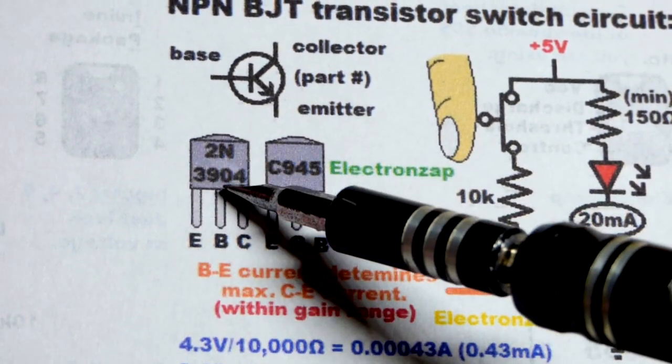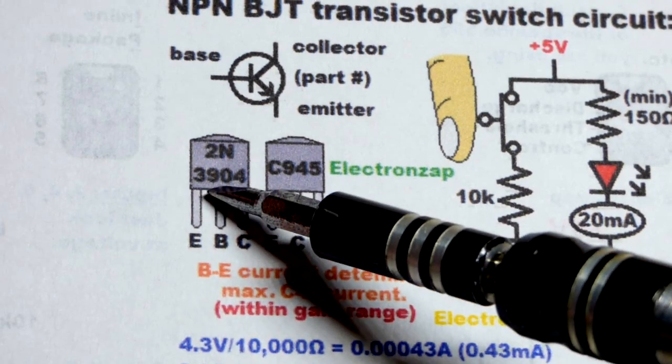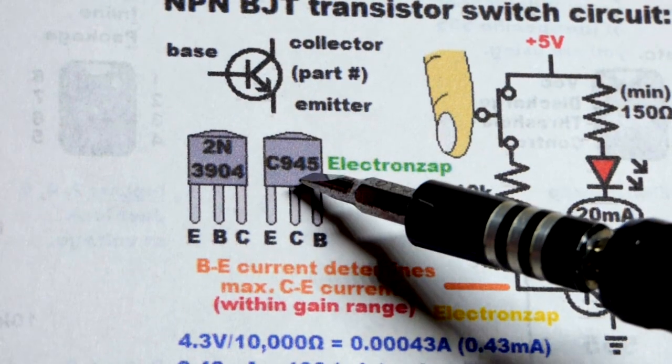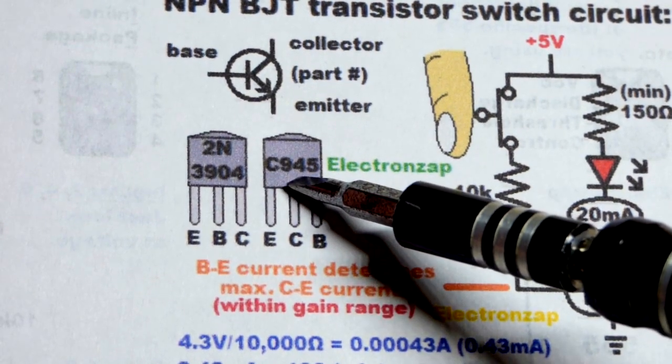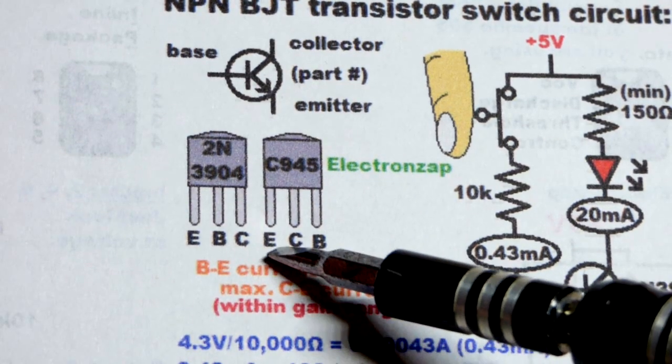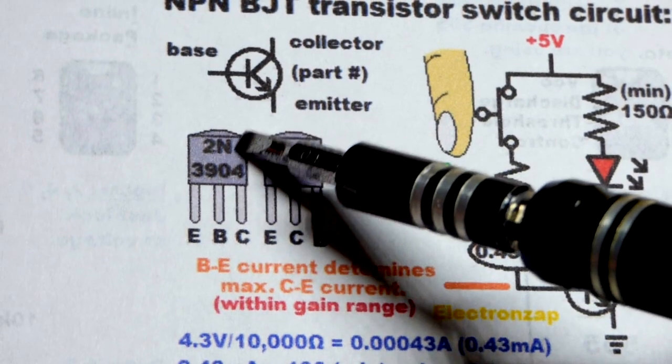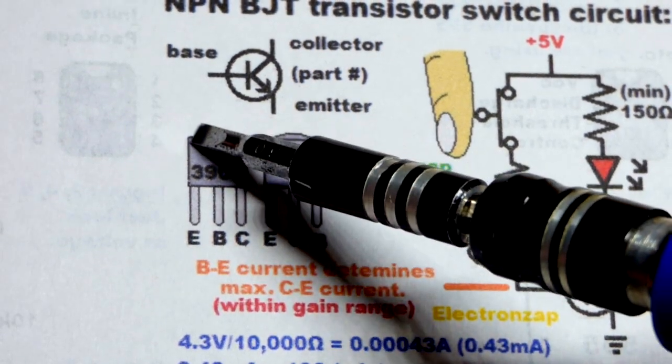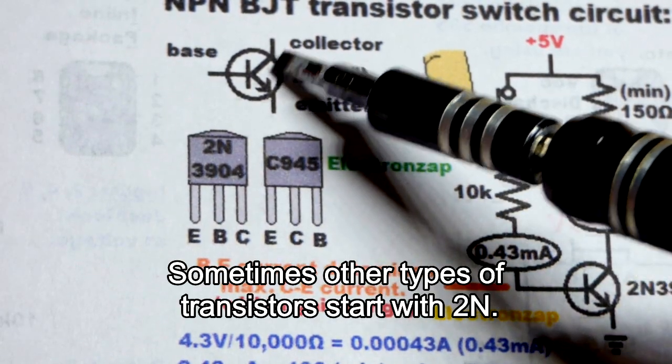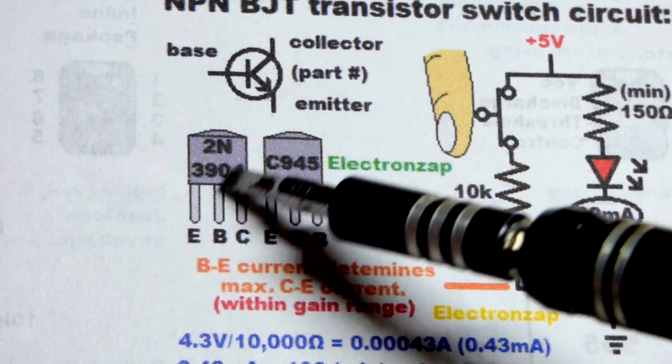So the physical component looks like this if it's in the TO92 package. We're going to be looking at the 2N3904. I think it's the most common NPN bipolar junction transistor these days. And somewhere I have a C945. I just included it here to show that the pin layout is not always the same. So if it starts with 2N, there's no letters or anything else before it, that 2N and it's a bipolar junction transistor, I find that we have the pin layout here looking at the flat side emitter base collector.